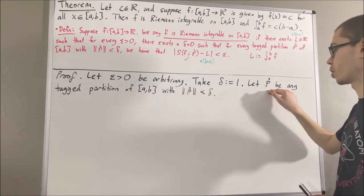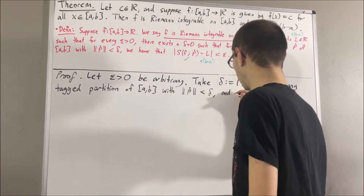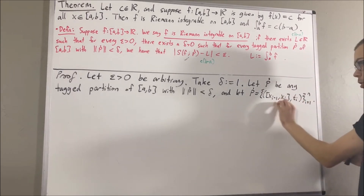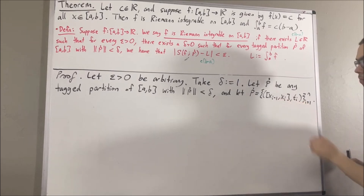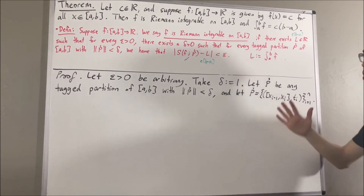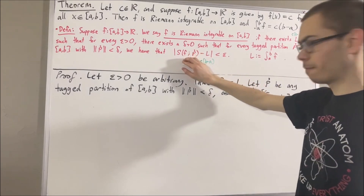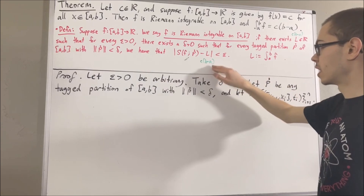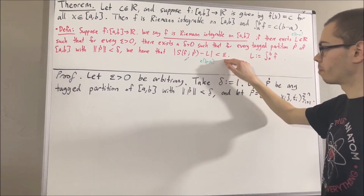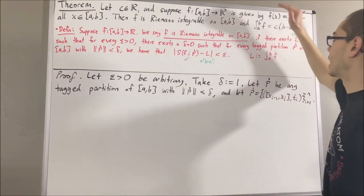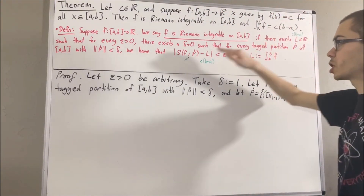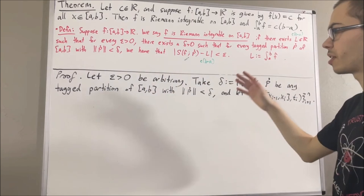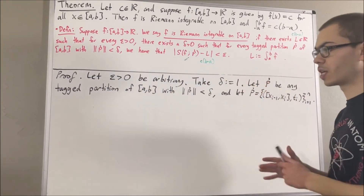We can say that the subintervals of our partition are labeled accordingly, with the corresponding tags in each subinterval. The whole goal is to show that the absolute value of the Riemann sum of f with this tagged partition minus c(b − a) is less than ε. The key idea is that with f being a constant function, we can show that the Riemann sum itself is equal to c(b − a).